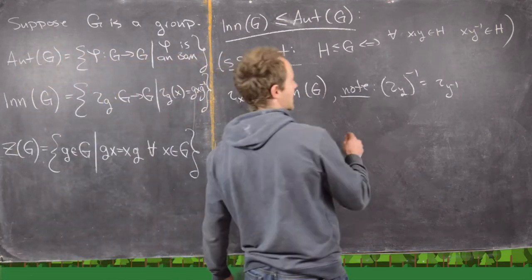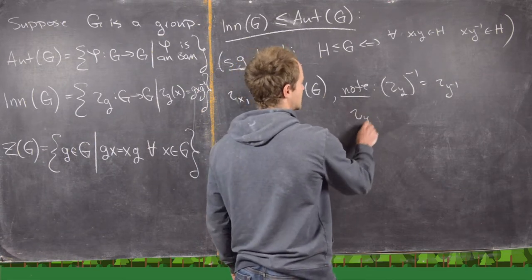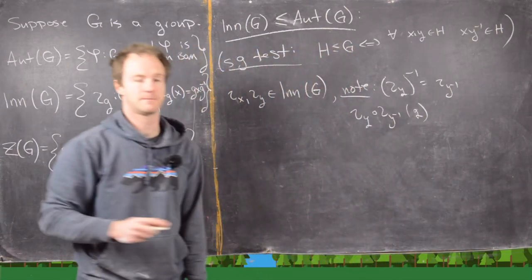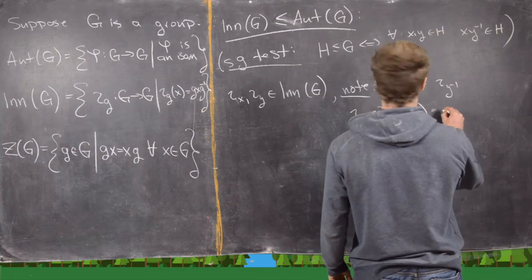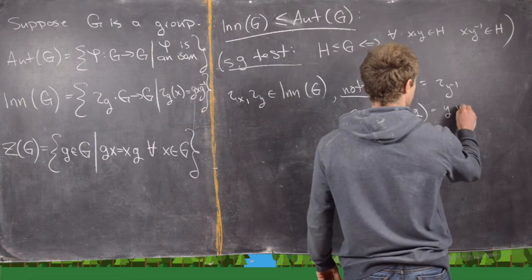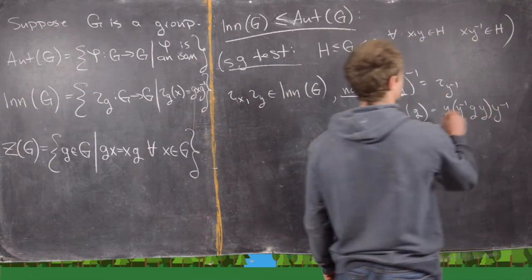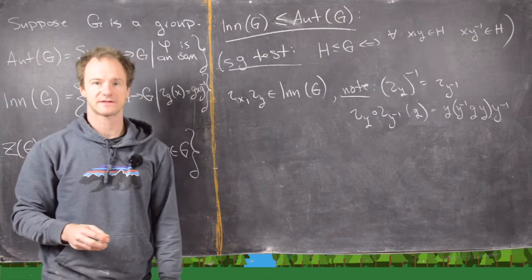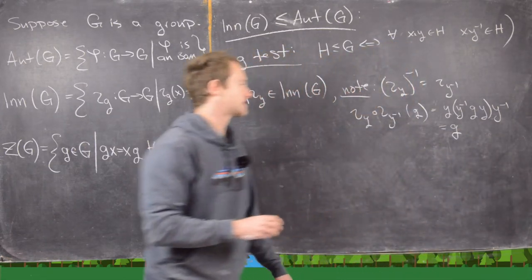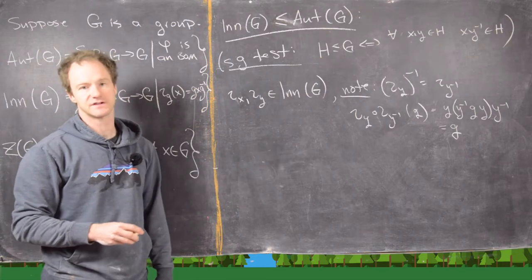We can verify this quickly: if we compose ιy with ιy⁻¹ and apply that to g, working from the inside to the outside, we get y · y⁻¹ · g · y · y⁻¹, which simplifies to just g — the identity automorphism applied to g. So that means these are indeed inverses of each other.